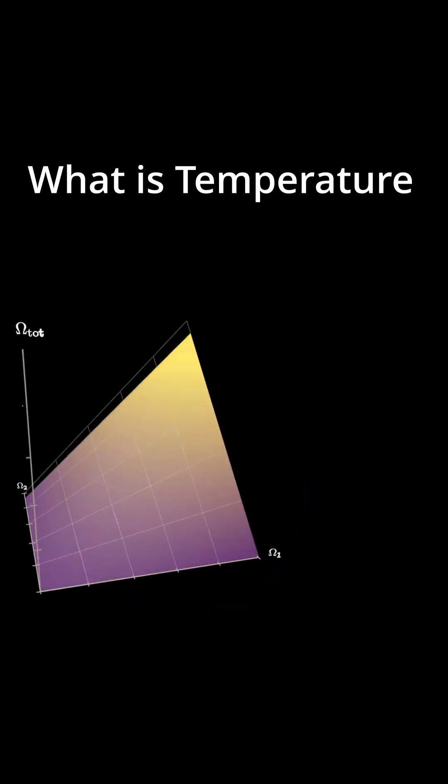On this graph, we plot the product of the microstates. Omega 1 and Omega 2 are respectively the available microstates for the hot and cold crystals.